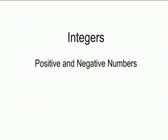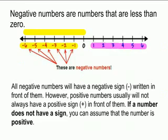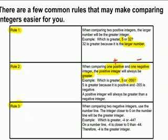Now rule three, which is the trickiest: when comparing two negative integers — so that would be a negative and a negative — the integer that is closest to zero will be greater. So for instance, negative four and negative forty-four: negative four is larger because it's closer to zero.